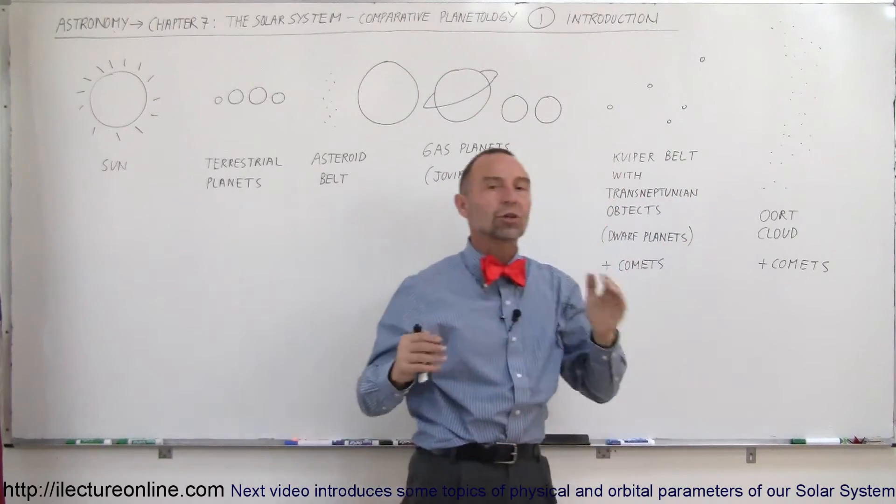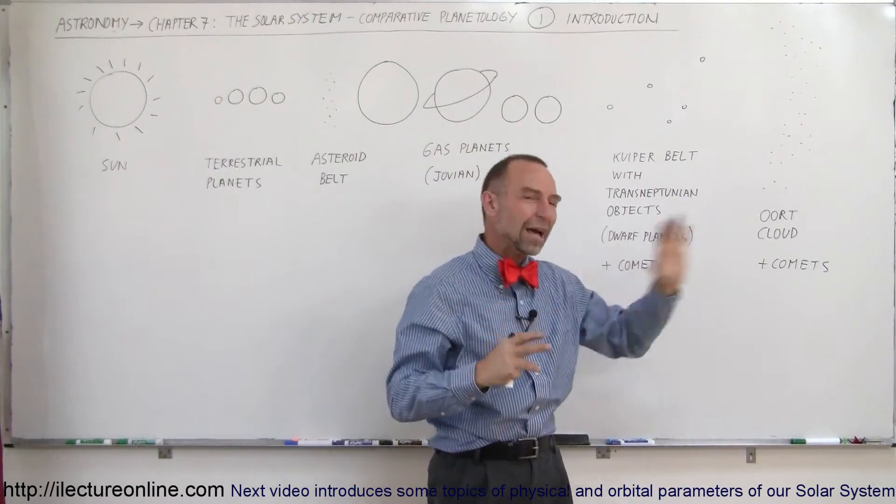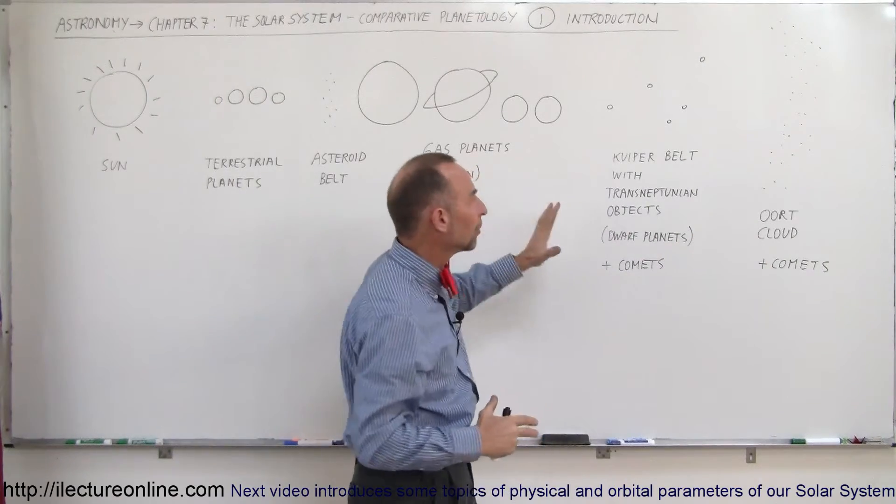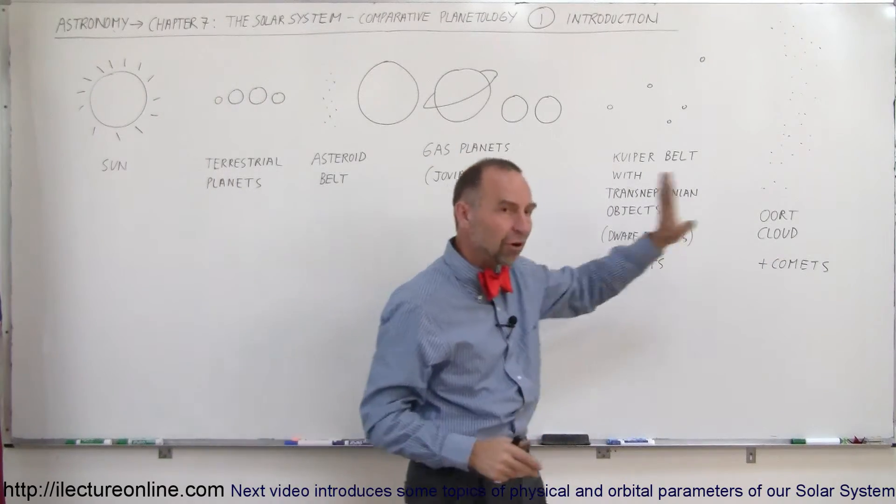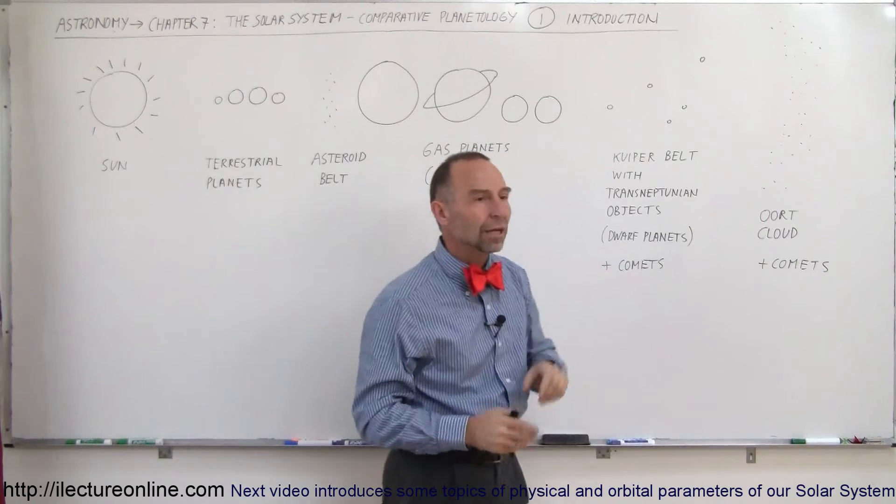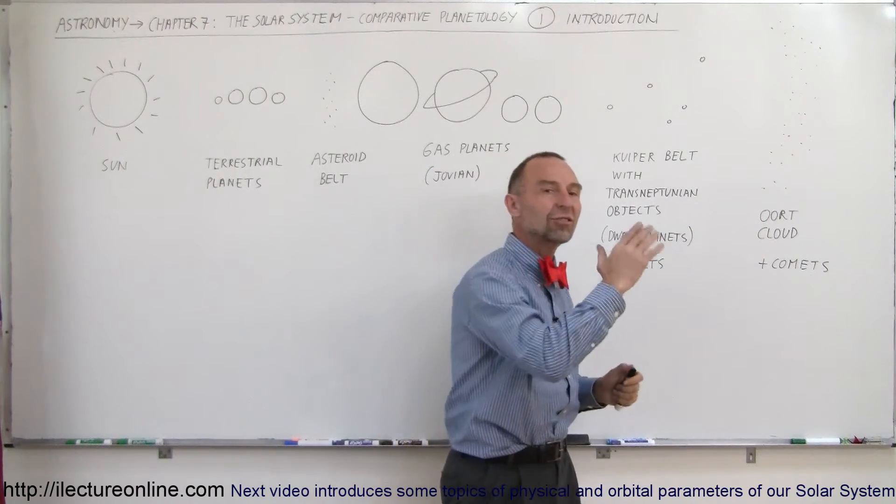And then beyond that, we have something called the Oort Cloud. Now, the Oort Cloud is a region way out there, much farther away than the Kuiper belt and all of the planets, far, far out there into the hundreds and thousands of astronomical units away.